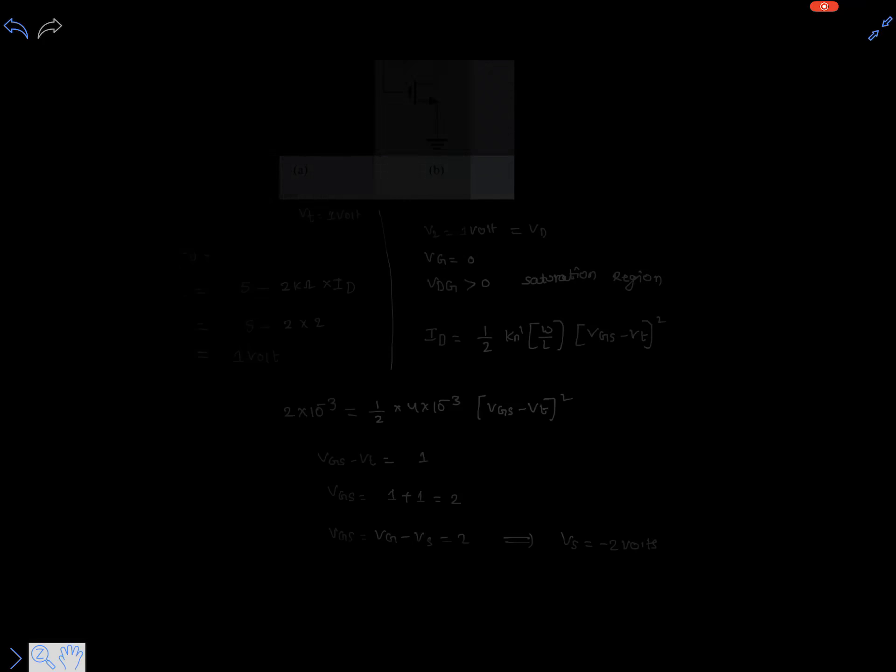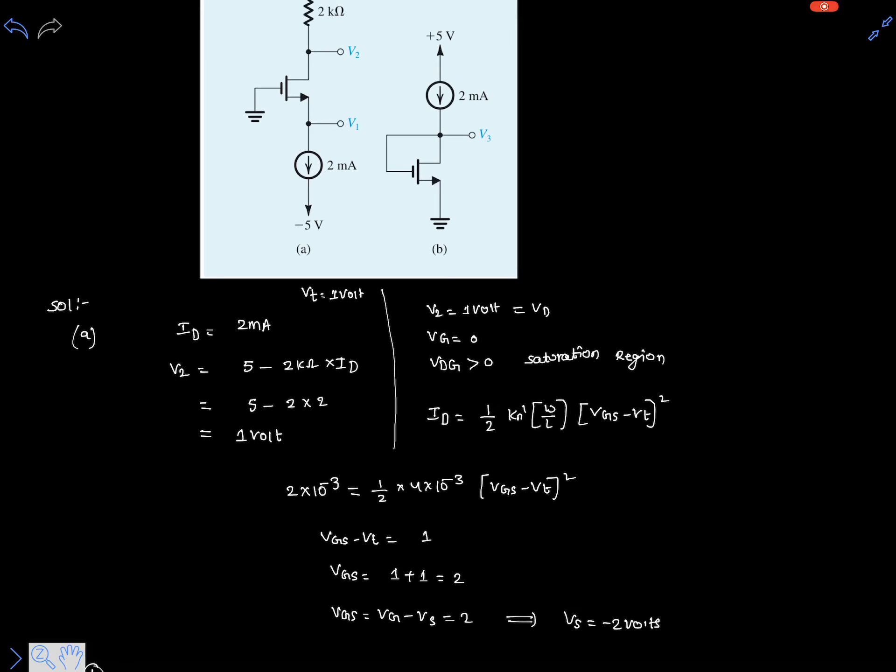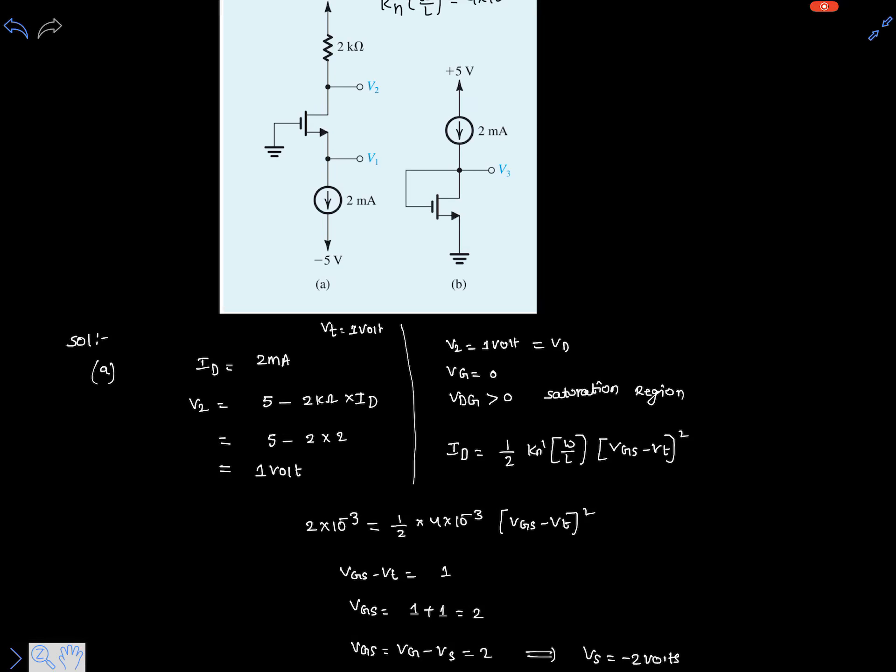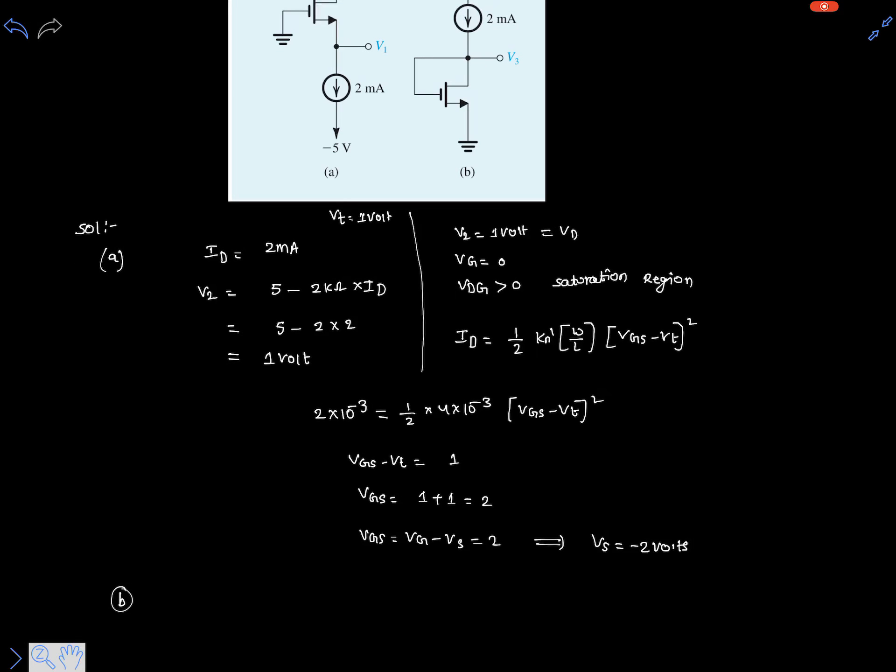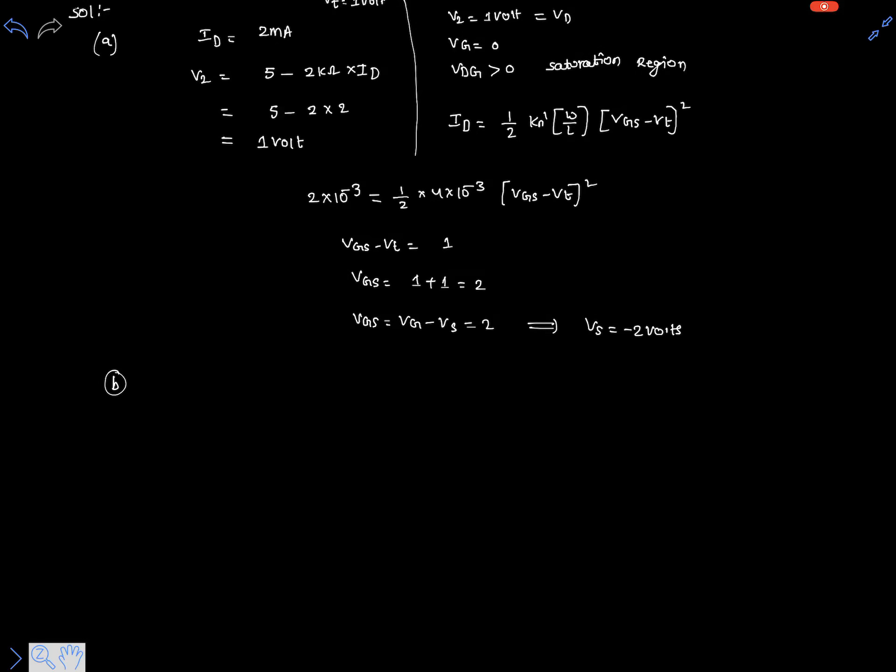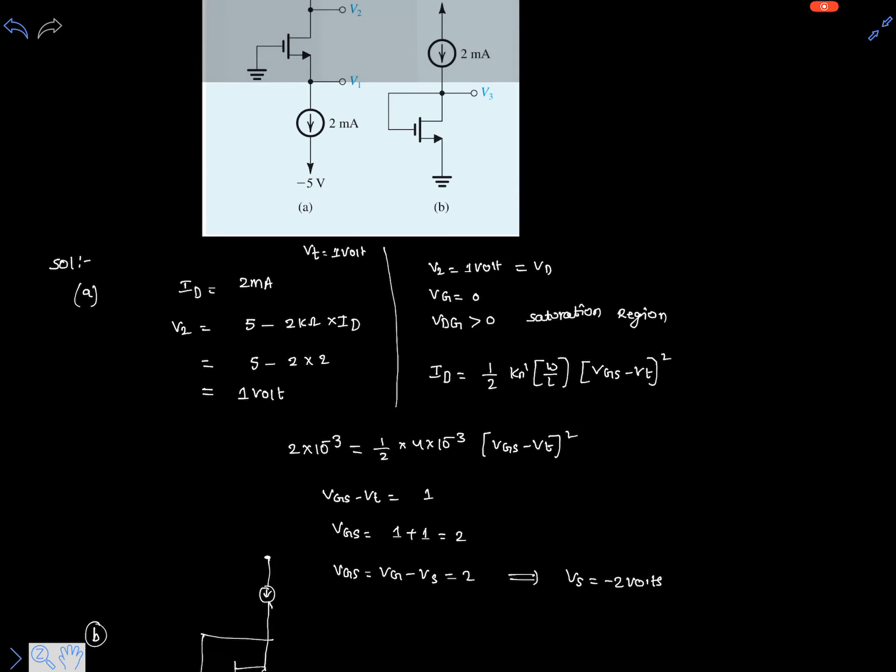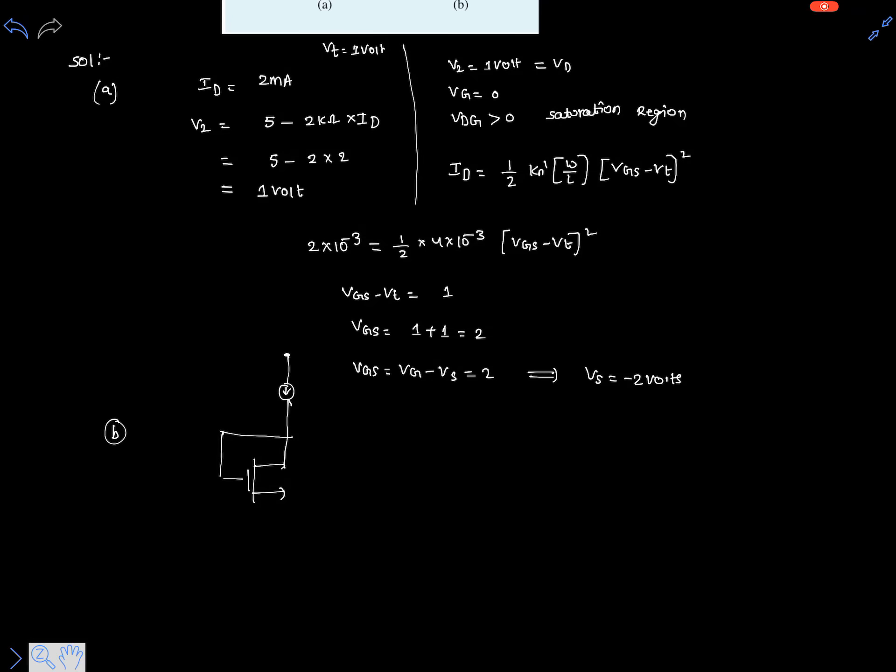Now let's go to part (b). In part (b), this also has the same parameters: transconductance and threshold voltage. Here the MOSFET is diode-connected. This is the circuit diagram given.